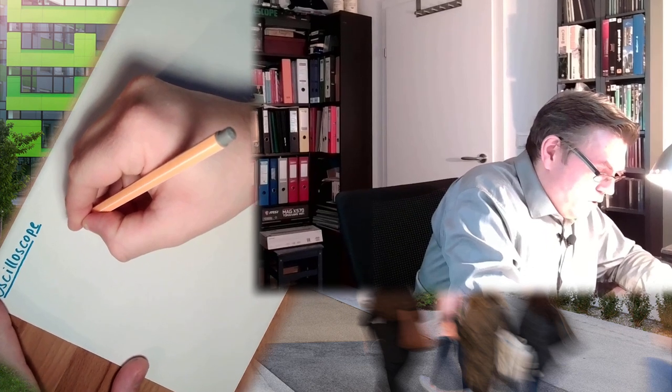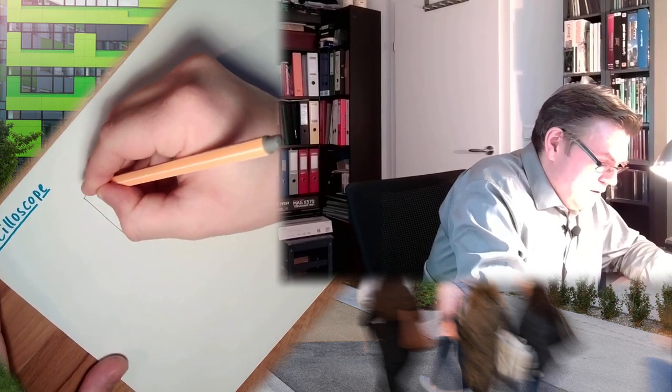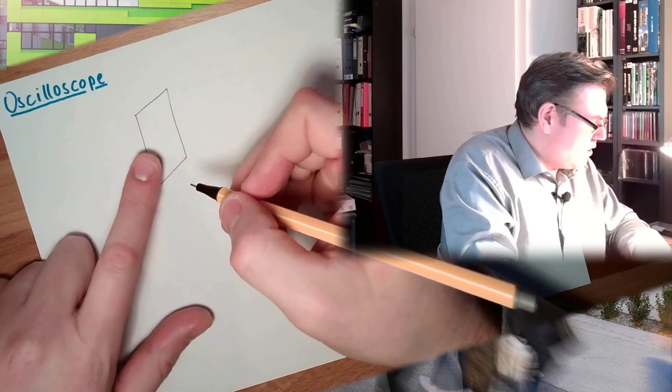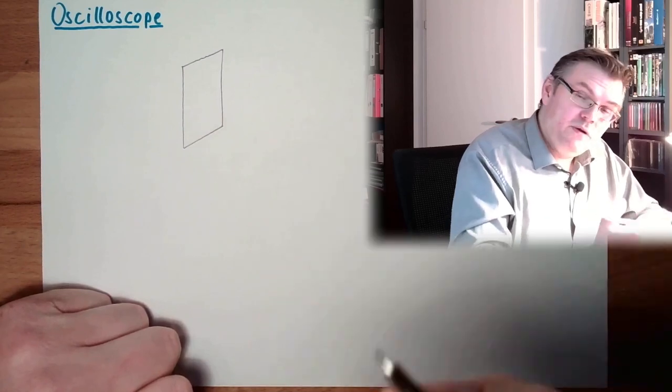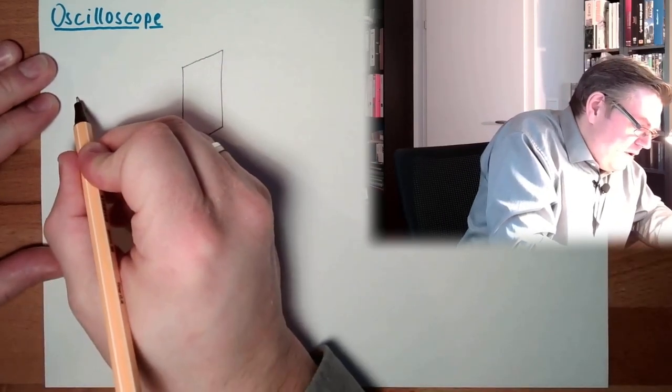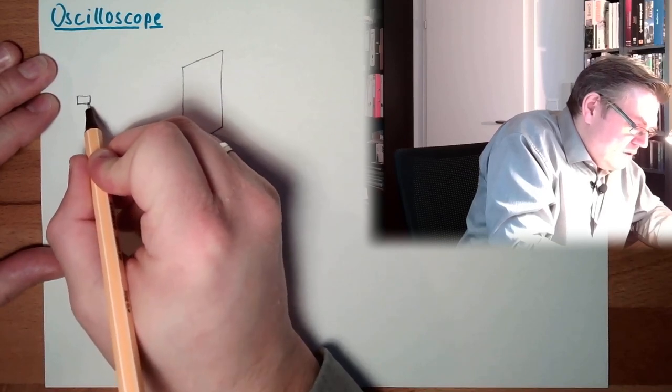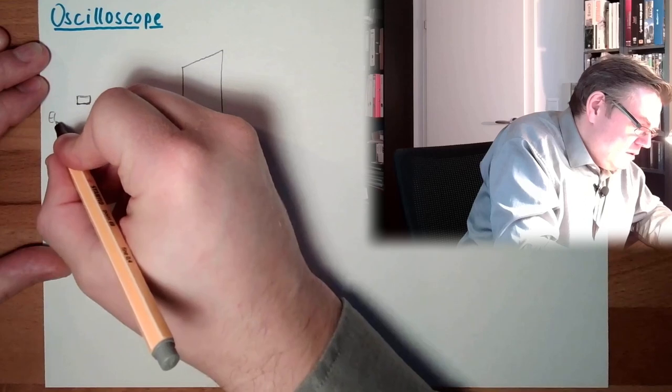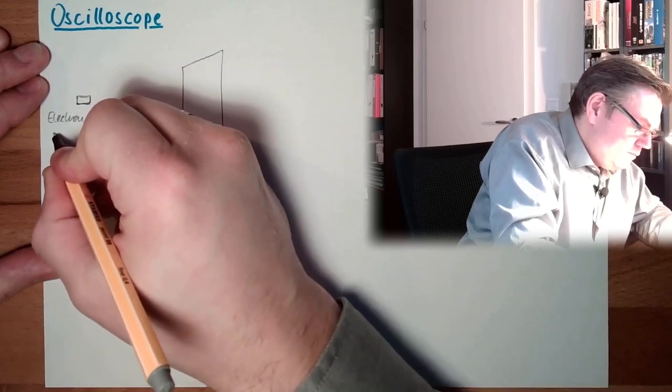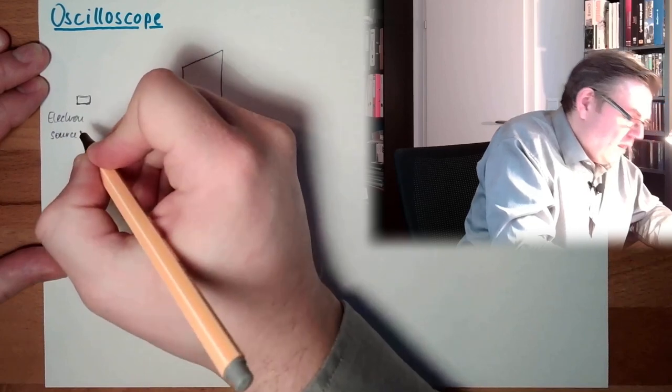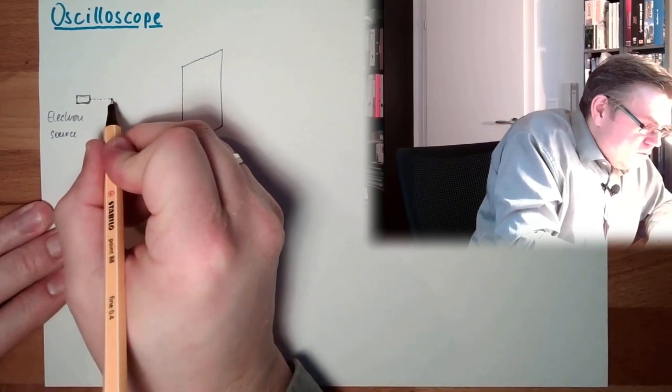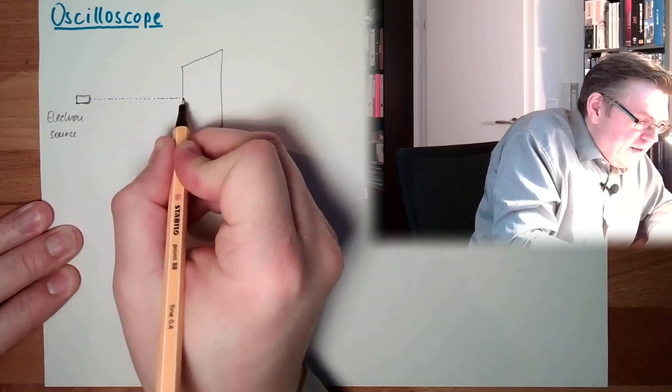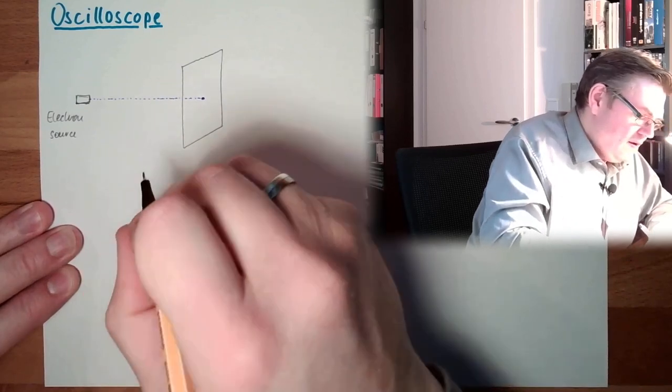How is this working? There is some screen. This was coated with some material. Whenever electrons hit the screen with a certain energy, the screen will light up. And there is somewhere some electron source. And this electron source is producing an electron beam. And this electron beam is hitting the screen somewhere, at some point.